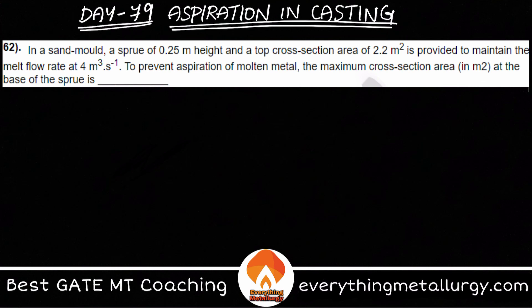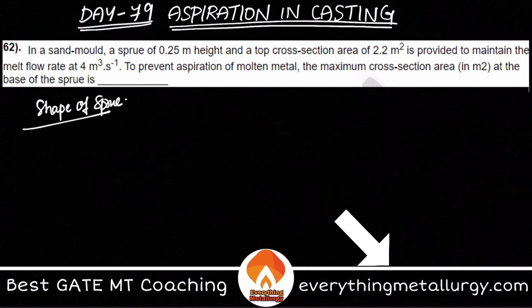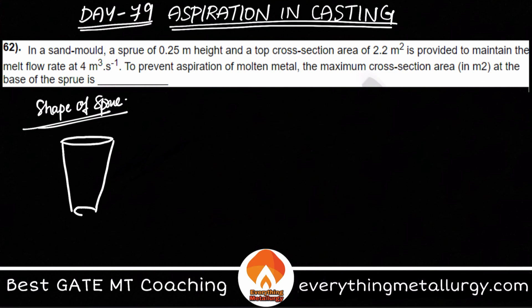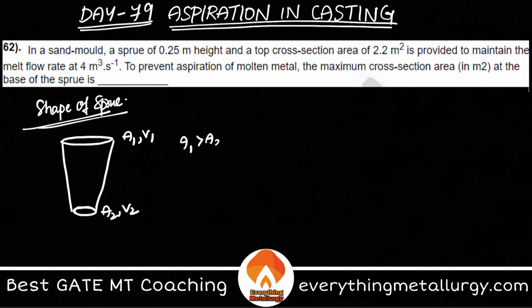The main thing that you need to take care of is the shape of the sprue. The shape of the sprue is very important when you are actually trying to control aspiration. It should have a decreasing cross-section. The sprue is what connects the pouring basin and the runner or the gating system. If you see A1 and V1 and A2 and V2 — A1 is greater than A2, so V2 will be greater than V1. As the area decreases, the velocity will increase.